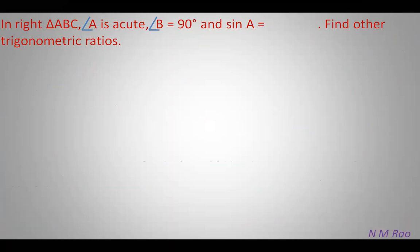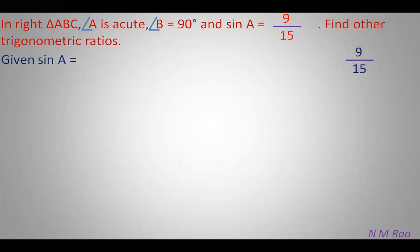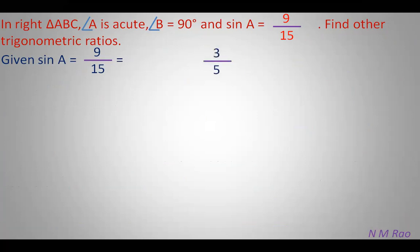Now let us solve some problems. In a right angle triangle ABC, angle B is 90 degrees, and sin A is given as 9/15. Since 9 and 15 are not co-primes — 3 is a common factor — we divide both numerator and denominator by 3 to express it in lowest terms, giving sin A equals 3/5.